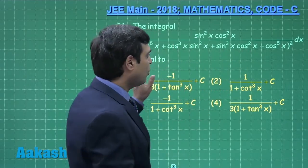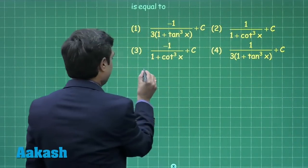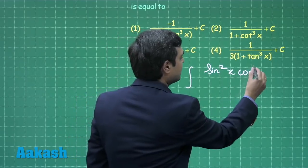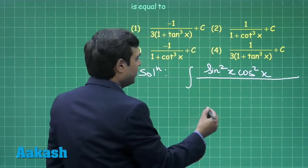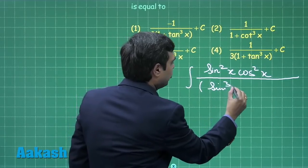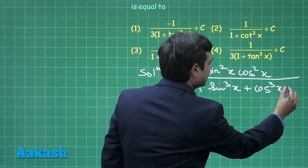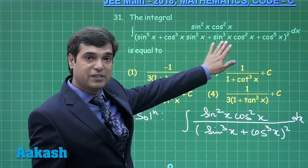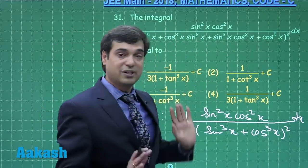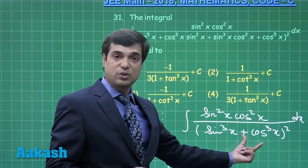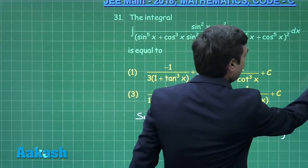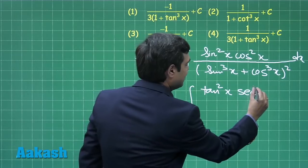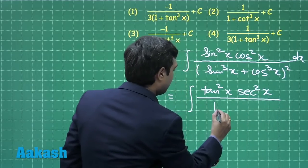Taking these two terms together, we can take sin³x common so it can be simplified. The integral becomes: numerator sin²x·cos²x divided by denominator (sin³x + cos³x)². We then took sin³x common from the first two terms and cos³x common from the second and fourth terms, leaving (sin³x + cos³x)². Now dividing numerator and denominator by cos⁶x, we obtain tan²x·sec²x divided by (1 + tan³x)².